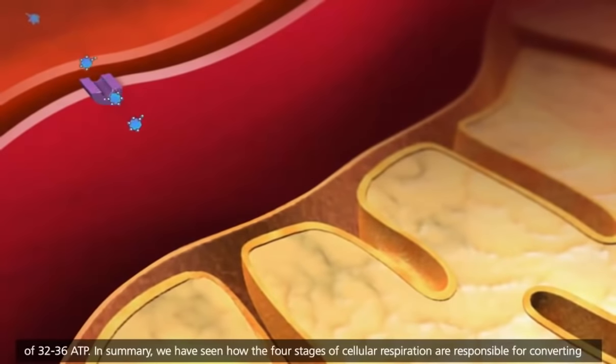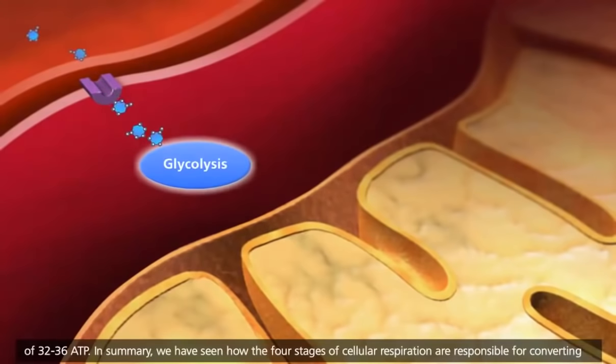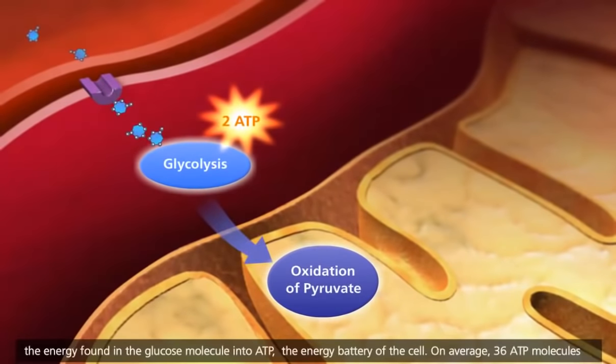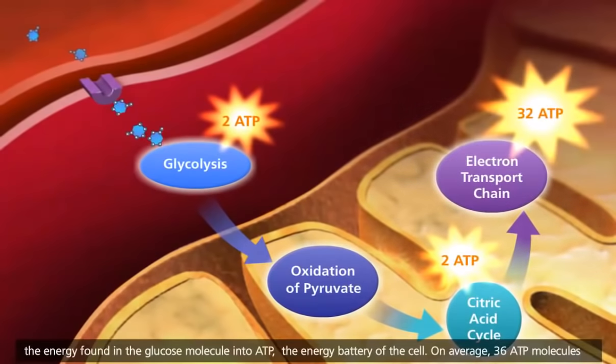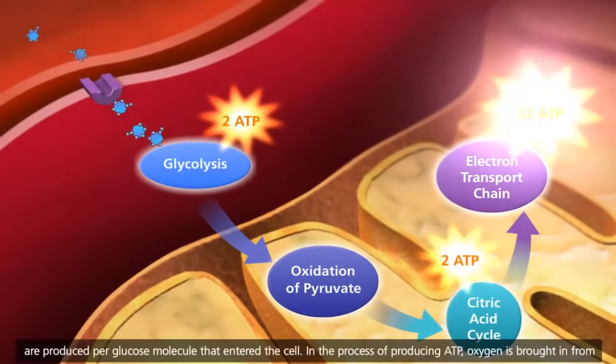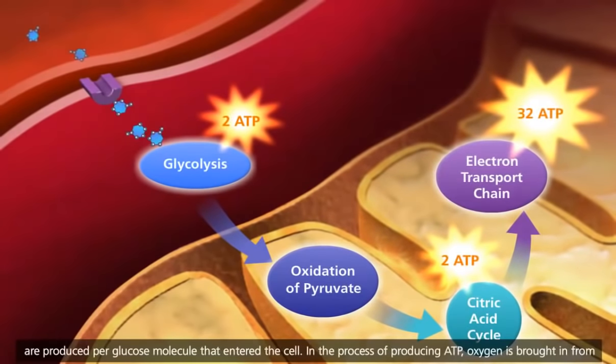In summary, we have seen how the four stages of cellular respiration are responsible for converting the energy found in the glucose molecule into ATP, the energy battery of the cell. On average, 36 ATP molecules are produced per glucose molecule that entered the cell. In the process of producing ATP, oxygen is brought in from the bloodstream to be the final electron acceptor in the electron transport chain.